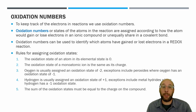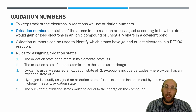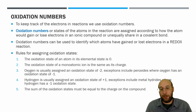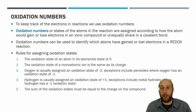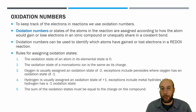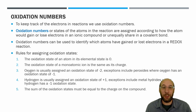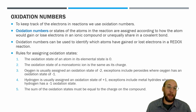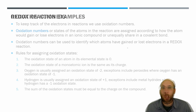Oxygen is usually assigned an oxidation state of −2, except in peroxides where it is −1, because oxygen is highly electronegative. Hydrogen is usually assigned +1 due to its small nucleus and low affinity for electrons, except in metal hydrides. The last rule is that the sum of oxidation states should equal the charge on the compound — usually zero.